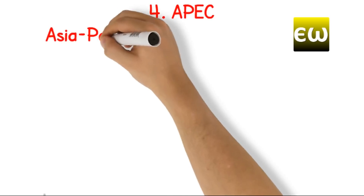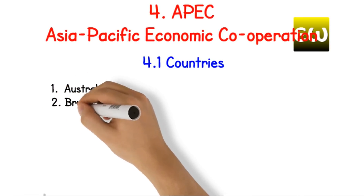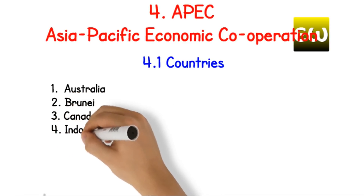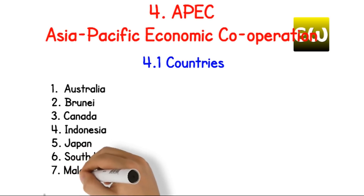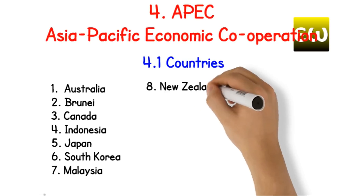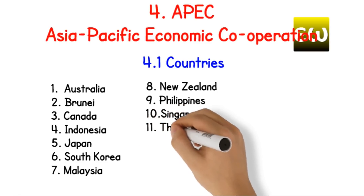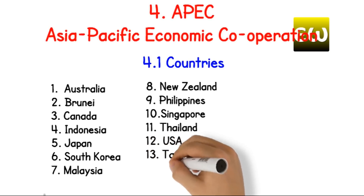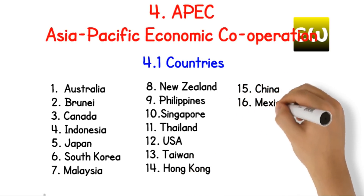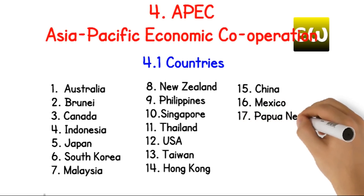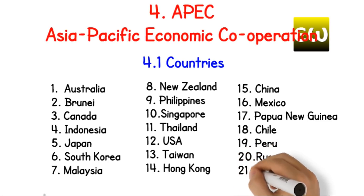Asia-Pacific Economic Cooperation. Countries: 1. Australia, 2. Brunei, 3. Canada, 4. Indonesia, 5. Japan, 6. South Korea, 7. Malaysia, 8. New Zealand, 9. Philippines, 10. Singapore, 11. Thailand, 12. USA, 13. Taiwan, 14. Hong Kong, 15. China, 16. Mexico, 17. Papua New Guinea, 18. Chile, 19. Peru, 20. Russia, 21. Vietnam.